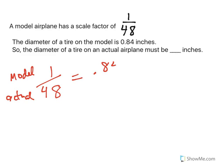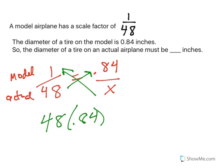We know that the model is 0.84. So what would that make the actual? There's a couple different ways you can do this, but cross-multiplying is by far the easiest. So we would end up with 48 times 0.84 equals x.